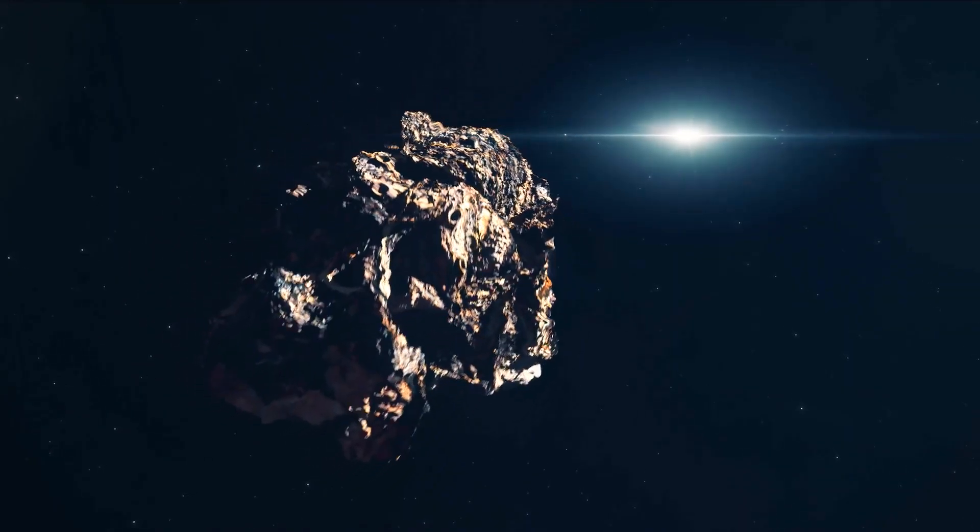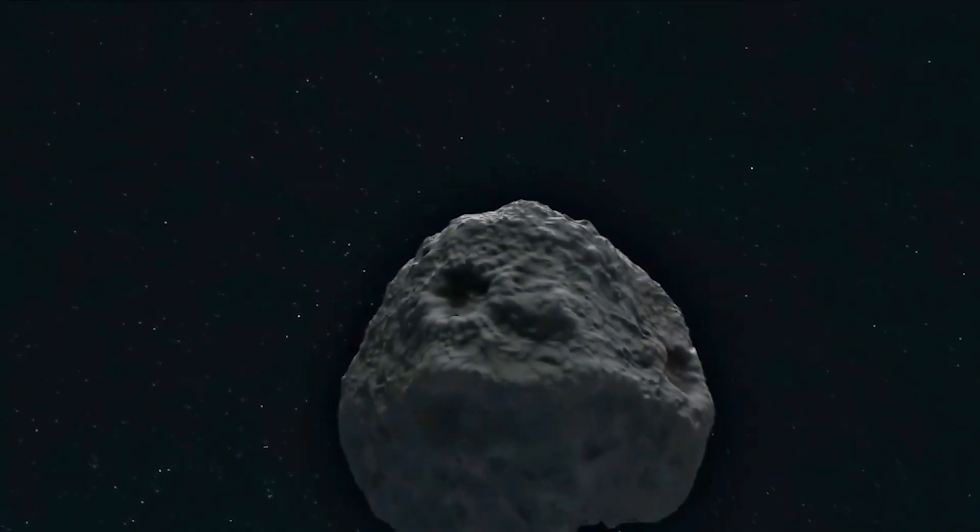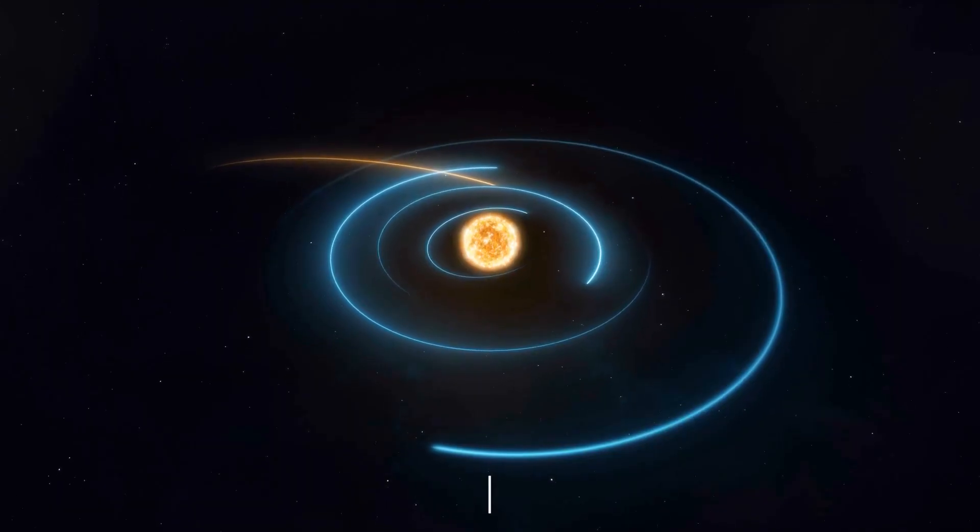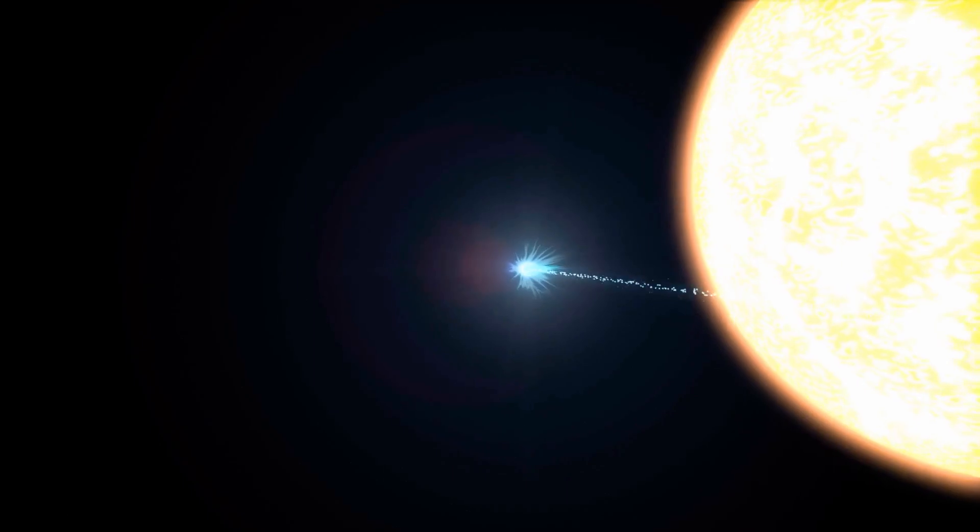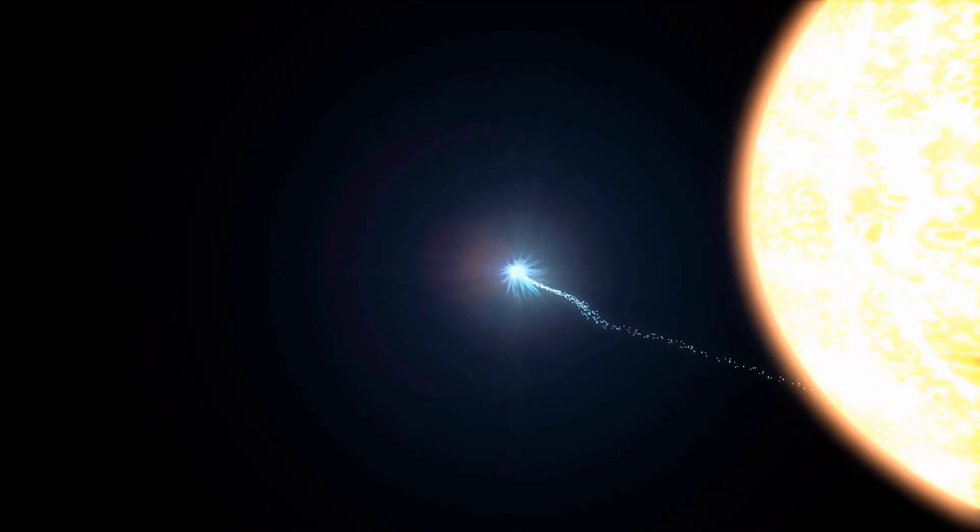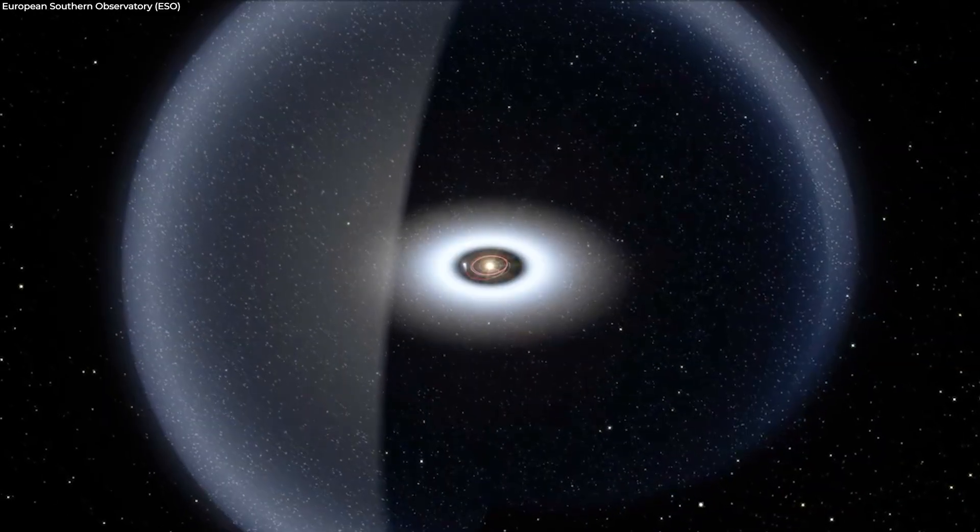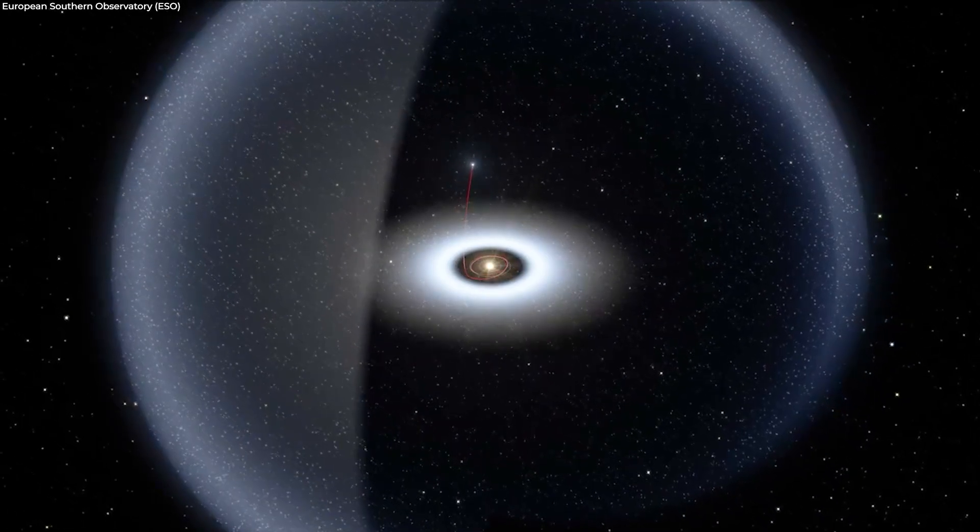Additional observations indicate that the object, nicknamed Comet Nishimura, has an orbit that is hyperbolic. When an item travels on a hyperbolic orbit around a larger object such as the Sun, it has enough energy to defy the gravity of the larger object.